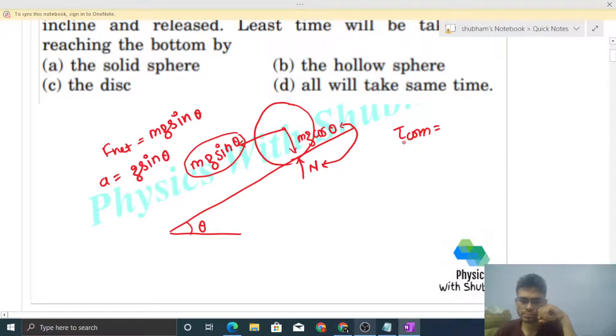There are two forces: one is mg and one is normal reaction. Both are passing through the center of mass, so torque of both will be zero. So net torque about the center of mass will be zero, so angular acceleration will be zero.